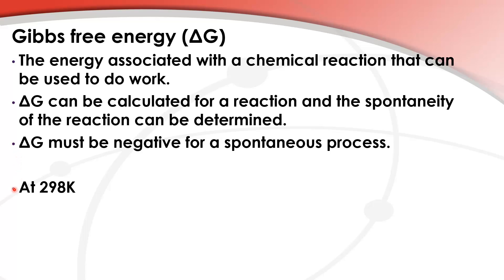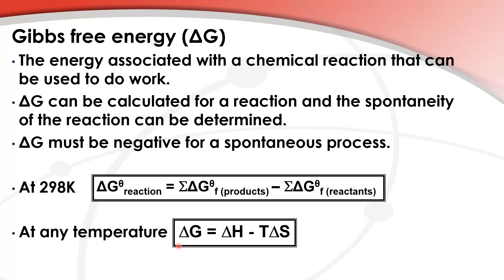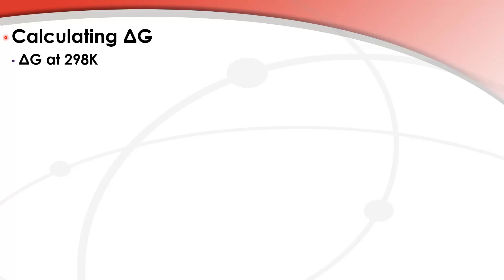There are two equations we can use to measure delta G. At 298 K and standard conditions, we use: delta G equals the sum of the Gibbs free energy of formation of the products minus the sum of the Gibbs free energy of formation of the reactants. At any temperature, we use: delta G equals the change in enthalpy minus the product of the temperature in Kelvin multiplied by the change in entropy.